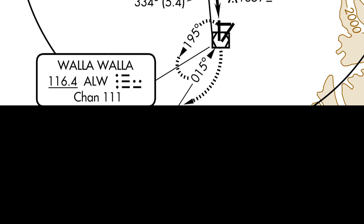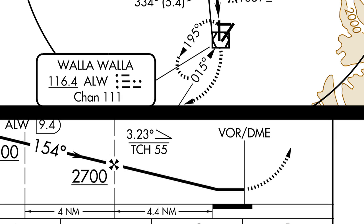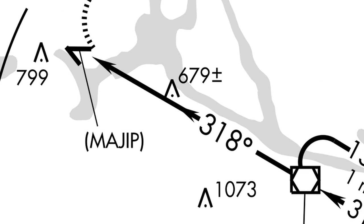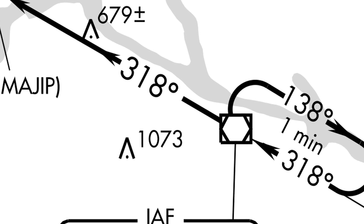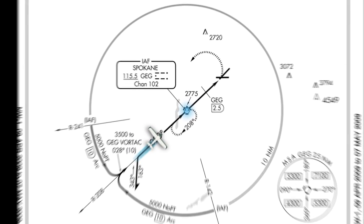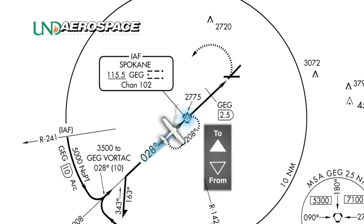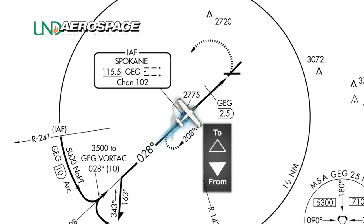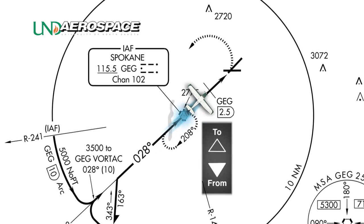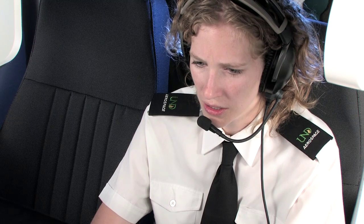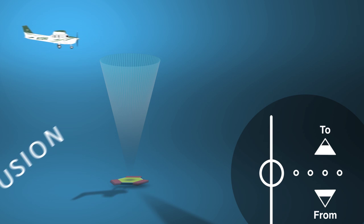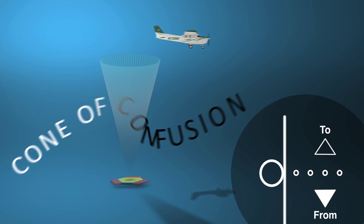While most non-precision approaches utilize on-airport nav aids such as a VOR or NDB, there are some approaches that use a nav aid that is not located at the airport. An example of this can be found in Spokane, Washington, where the pilot navigates to the Spokane VOR and then continues the procedure by flying from the VOR. A pilot must be aware of the location of the nav aid to prevent confusion and anticipate any errors that might occur, such as crossing the cone of confusion over a VOR.